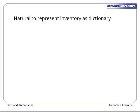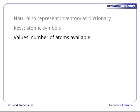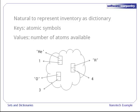Let's start with our inventory. Our input consists of pairs of strings and numbers, which naturally suggests using a dictionary for storage. The keys will be atomic symbols, and the values will be the number of atoms of that kind we currently have in stock. The result will look like this.